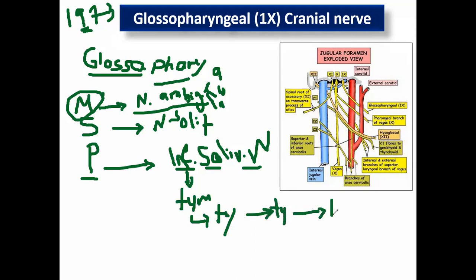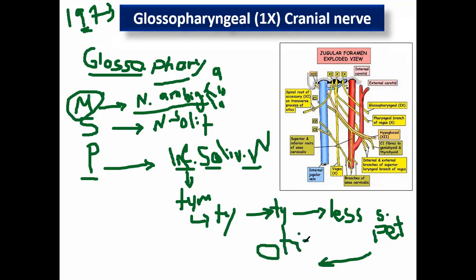Remember the GIT block? The inferior salivary nucleus gives a tympanic branch that reaches the tympanic cavity — the middle ear — forming the tympanic plexus. Then it gives a branch named the lesser superficial petrosal. The petrosal relays in the otic ganglion, which is related to the glossopharyngeal nerve to supply the parotid gland. This is the parasympathetic nerve supply of the parotid gland.